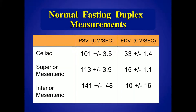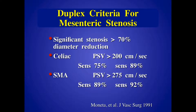Normal velocity measurements: for the ICA it's 60 to 100 centimeters per second, and we tend to be in the same range — maybe a little bit higher for the mesenteric arteries. The celiac is about 100 centimeters per second, a little higher for the SMA and IMA, which is why we have the higher cutoff of 275 for the SMA. For a flow-reducing lesion, velocity cutoffs are 200 for the celiac and the IMA, and 275 for the SMA. That comes from work done long ago by Greg Moneta from the University of Oregon, and it has held up.